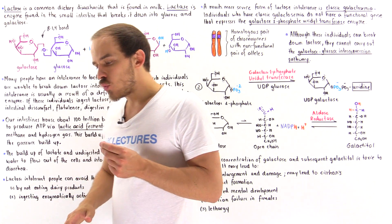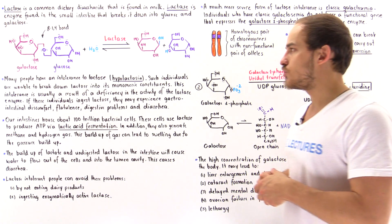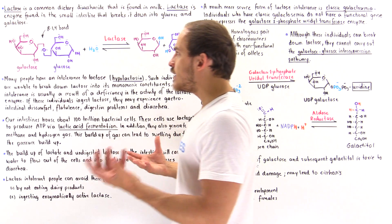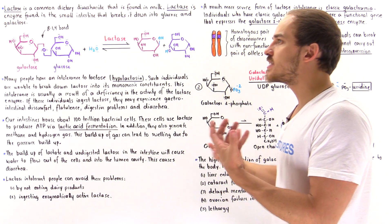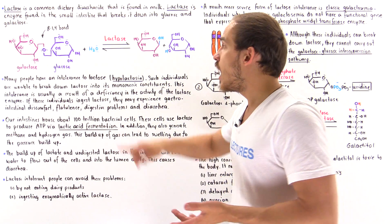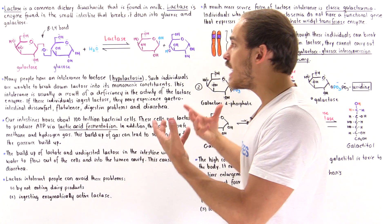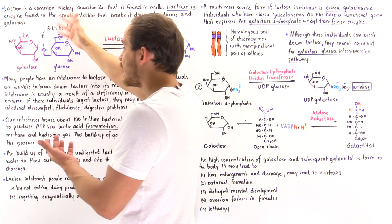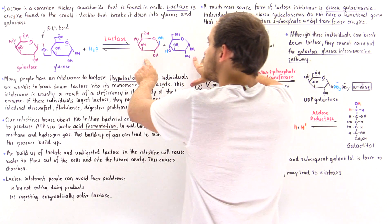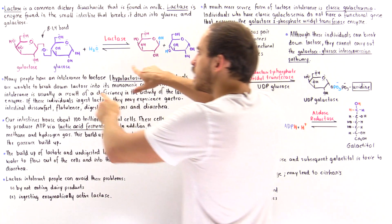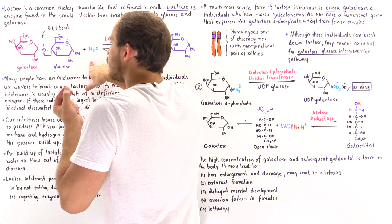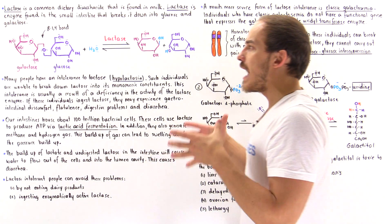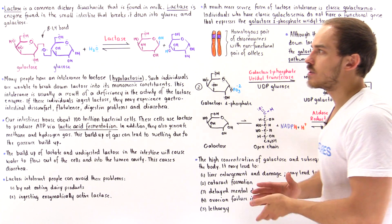Some individuals are basically intolerant to lactose, and this condition is commonly known as hypolactasia. These individuals have some type of deficiency in the activity of the lactase enzyme. If the enzyme cannot carry out its function, it cannot break the bond, the two monosaccharides will not be formed, and the disaccharide cannot be taken up by the cells. This leads to a buildup of lactose in the lumen of the colon and small intestine — the colon being the large intestine.